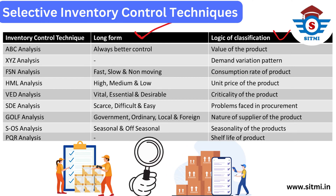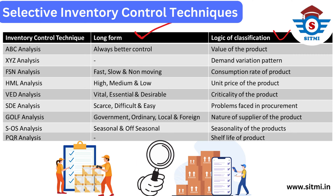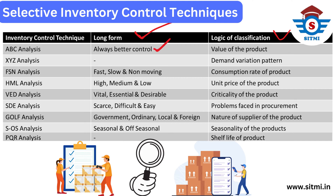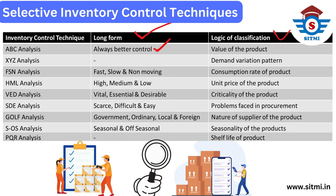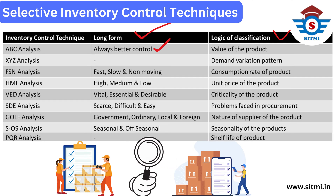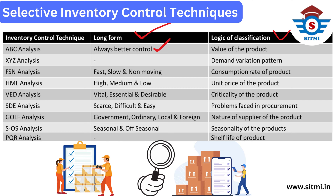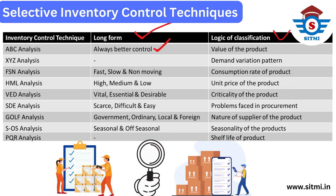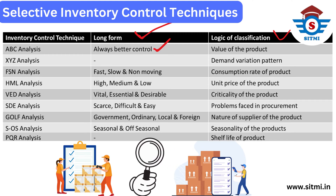The first technique is called ABC analysis. In ABC analysis, items are categorized as A, B, and C class material. The long form is also referred to as 'Always Better Control' in inventory management. The logic used for ABC classification is based on the value of the product — specifically, the consumption value is considered to perform the ABC analysis.